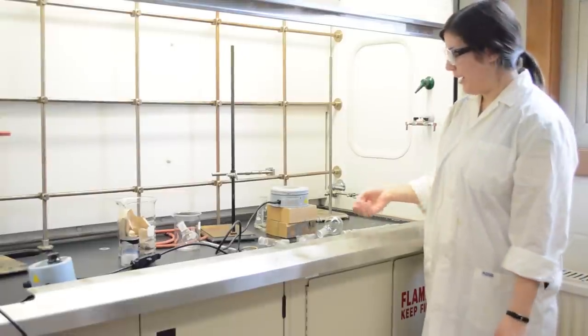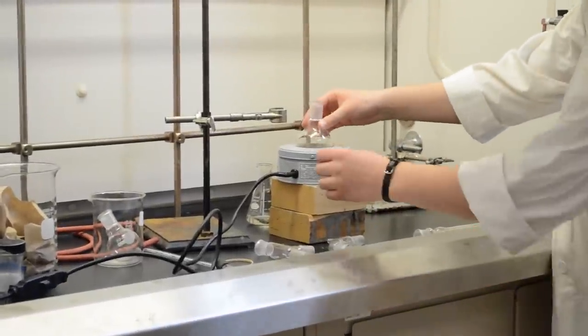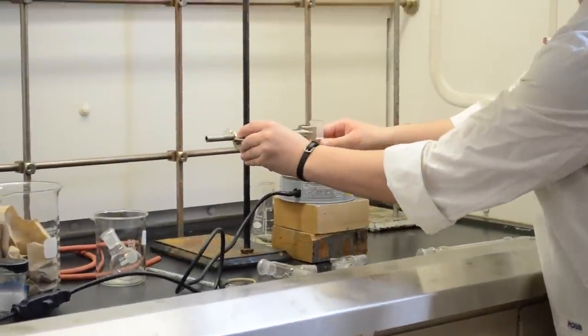To set up a distillation apparatus, first place a heating mantle on wooden blocks to elevate it. Put your flask in and clamp it.